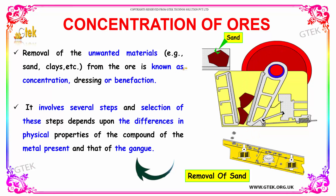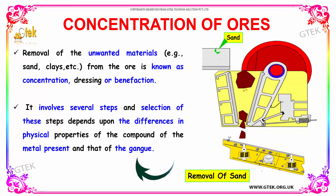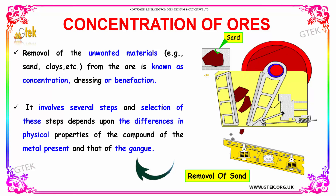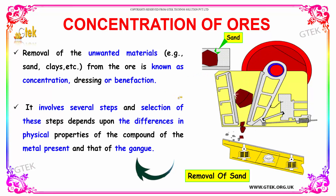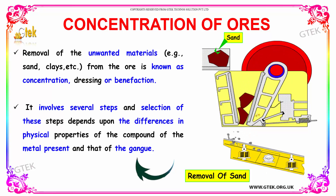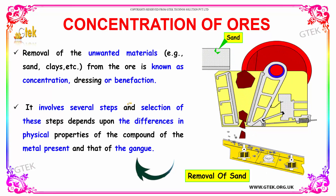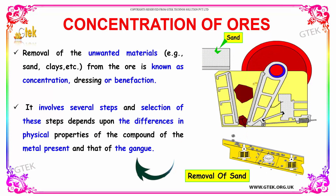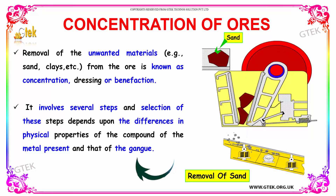The removal of unwanted materials — sand, clays, etc. — from the ore is known as concentration, dressing, and beneficiation. It involves several steps, and the selection of these steps depends upon the difference in physical properties of the compound of the metal present and that of the gangue.